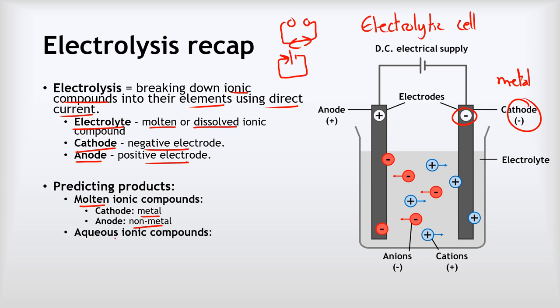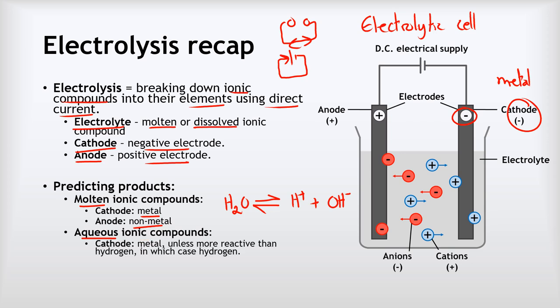With aqueous ionic compounds — that means a solution — it gets more complicated, because water can split up into hydrogen ions and hydroxide ions, and so in an aqueous solution those ions can get involved and be discharged instead of the ionic compound. At the cathode, if the metal in our ionic compound is more reactive than hydrogen, we'll see hydrogen discharged instead. If the metal is less reactive than hydrogen, we'll get that metal. At the anode we'll normally get the non-metal, unless the ionic compound is a sulfate or nitrate salt, in which case we'll see oxygen being formed.